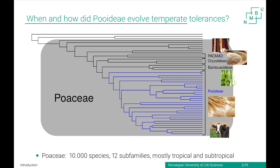The Poidae are part of the grass family, the Poaceae, which is a big family — 10,000 species, 12 subfamilies. They are grouped into three early diverging subfamilies, six subfamilies grouped in the PACMAD clade where you can find all the C4 grasses — maize, sugar cane, and sorghum — and then the clade we call the BOP clade, with rice, bamboos, and the Pooideae. The Poidae harbor all the temperate cereals and temperate forage crops, which are economically really important.